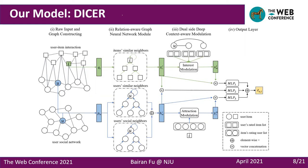To tackle the issues mentioned above, in this paper we propose DICER, which incorporates high-order neighbor information to model the enhanced user preference and item attribute, and extracts the most related information from the interaction history based on the graph-enhanced deep context. The proposed model consists of 4 modules: the graph construction module, GNN module, deep context-aware modulation module, and output layers.